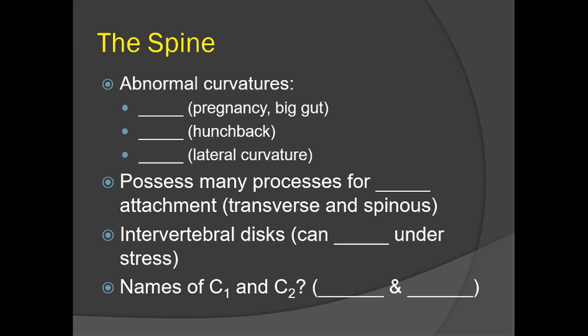Intervertebral discs sit between each vertebra and can herniate under stress. These discs provide cushion, support, and flexibility, increasing range of motion between the vertebrae. They act primarily as a cushion between the bones, giving the spine a substantial range of motion as slightly movable joints.